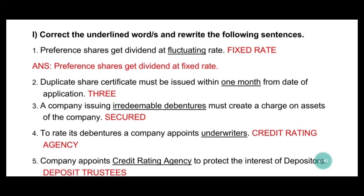Fourth one: to rate its debentures, a company appoints underwriters. Does a company appoint underwriters to rate debentures? No. Credit rating agencies like CRISIL are appointed to rate debentures — giving ratings like A+, B+. Underwriters guarantee the company when it brings new shares to market; if minimum subscription is not met, underwriters purchase shares and get commission. So 'underwriters' changes to 'credit rating agencies'.